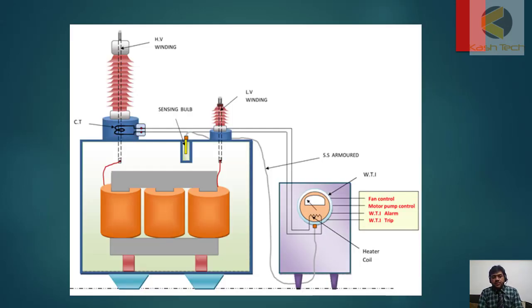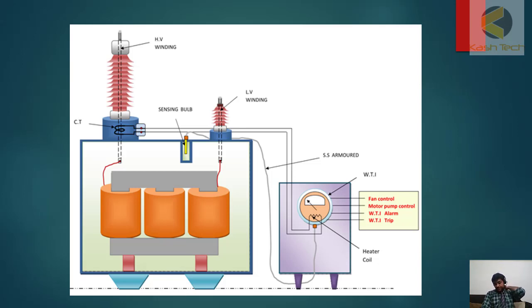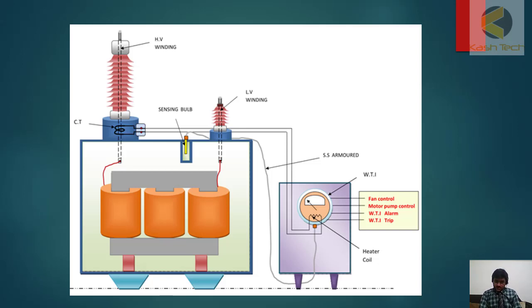There are two types of indicators: oil and winding. For the oil temperature indicator, the sensor is dipped directly in the oil so you can measure the oil temperature. However, the winding temperature indicator does not measure the real winding temperature of the transformer.